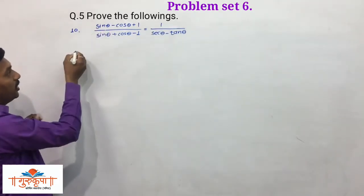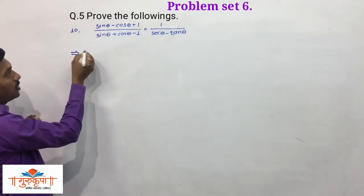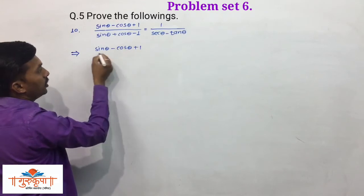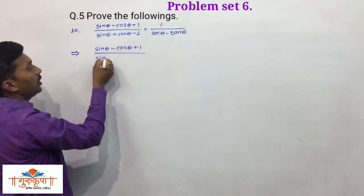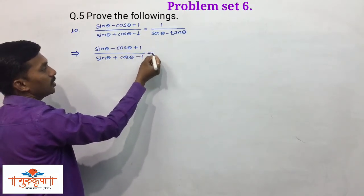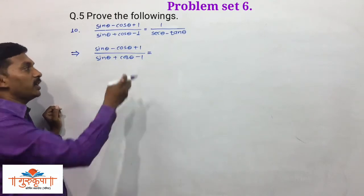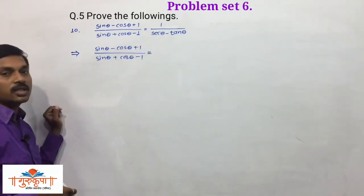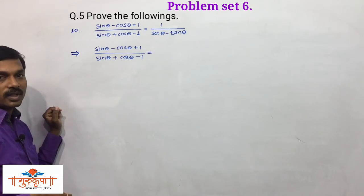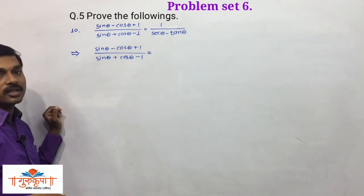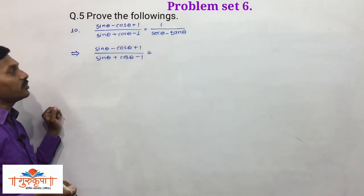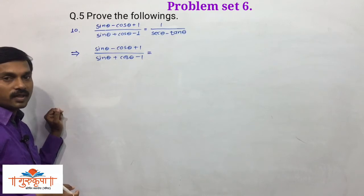We write the LHS as it is: (sinθ - cosθ + 1) upon (sinθ + cosθ - 1). Simplifying this we have to get the RHS, that is 1 upon (sinθ - tanθ). This is an important example compared to all other 9 examples. You have to remember the solution carefully — which identities we have to use is very important.